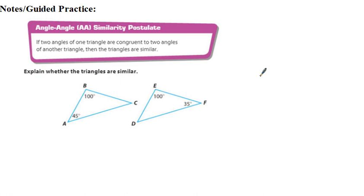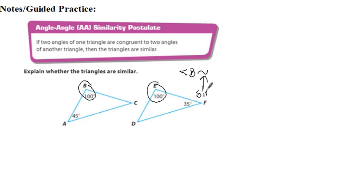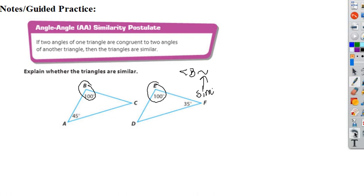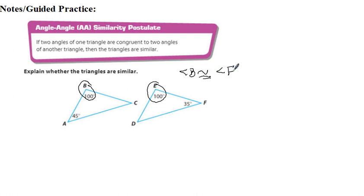They want us to prove whether these two triangles are in fact similar. We have two angles that are congruent. Angle B and angle E are congruent — we need two angles to be congruent. So what I have to do is figure out what the third angle is for each triangle.